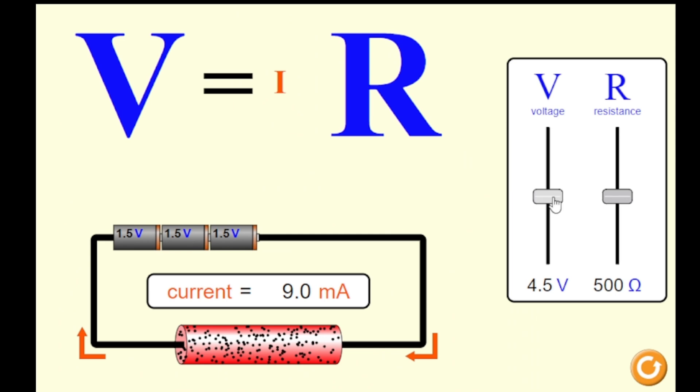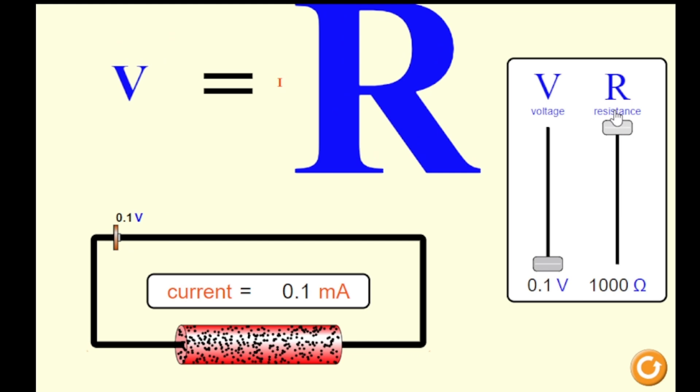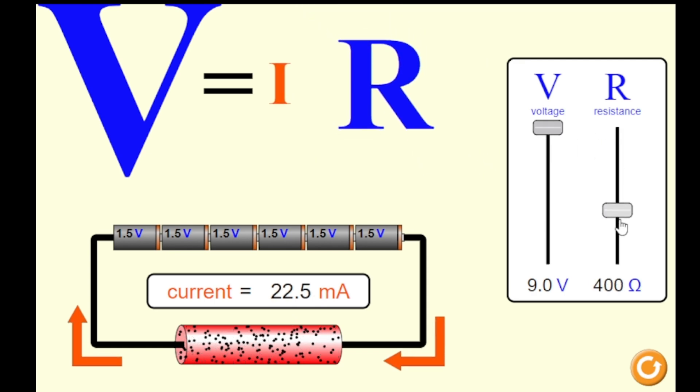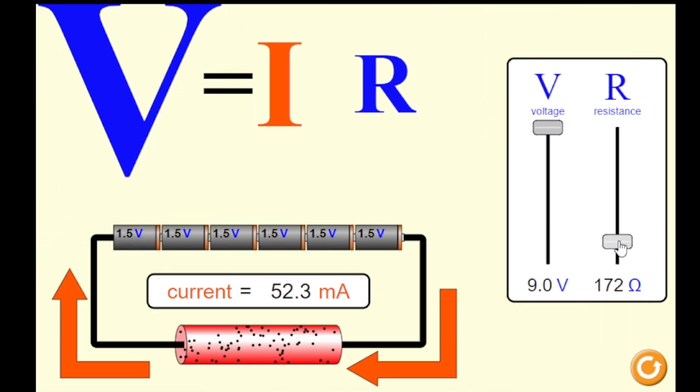Voltage at minimum, resistance at maximum, a very minimal flow of electrons. Voltage at maximum, resistance at maximum, minimum flow because the resistance is high. Voltage at maximum, resistance at minimum, your current increases.